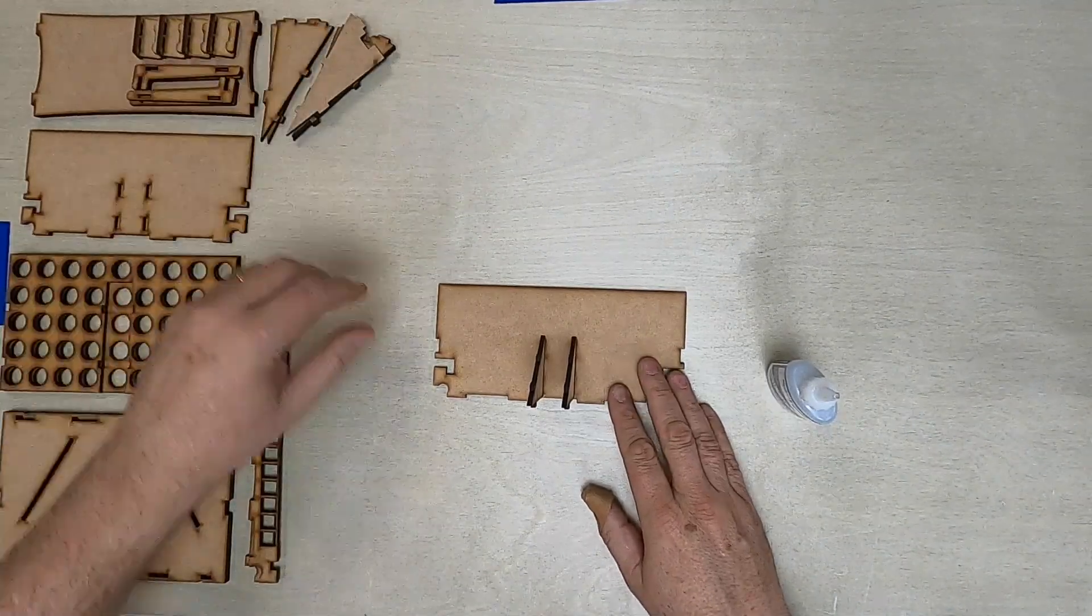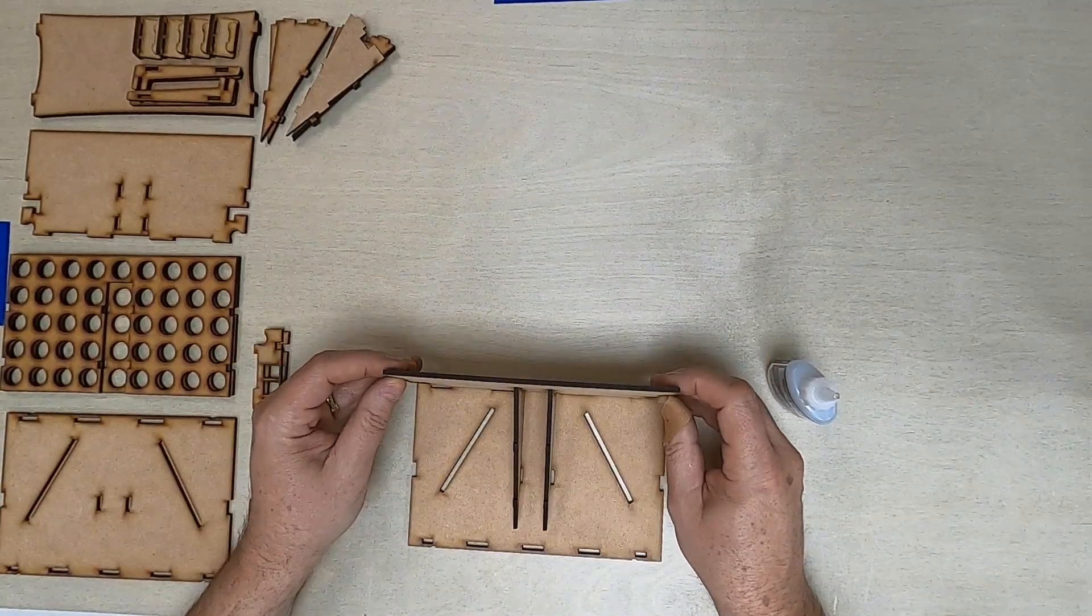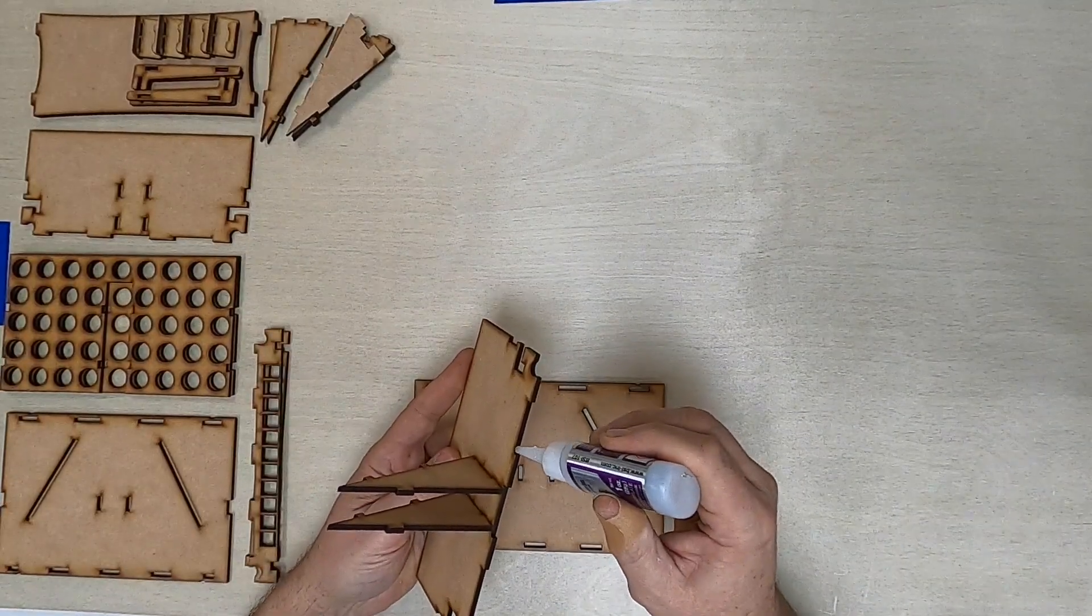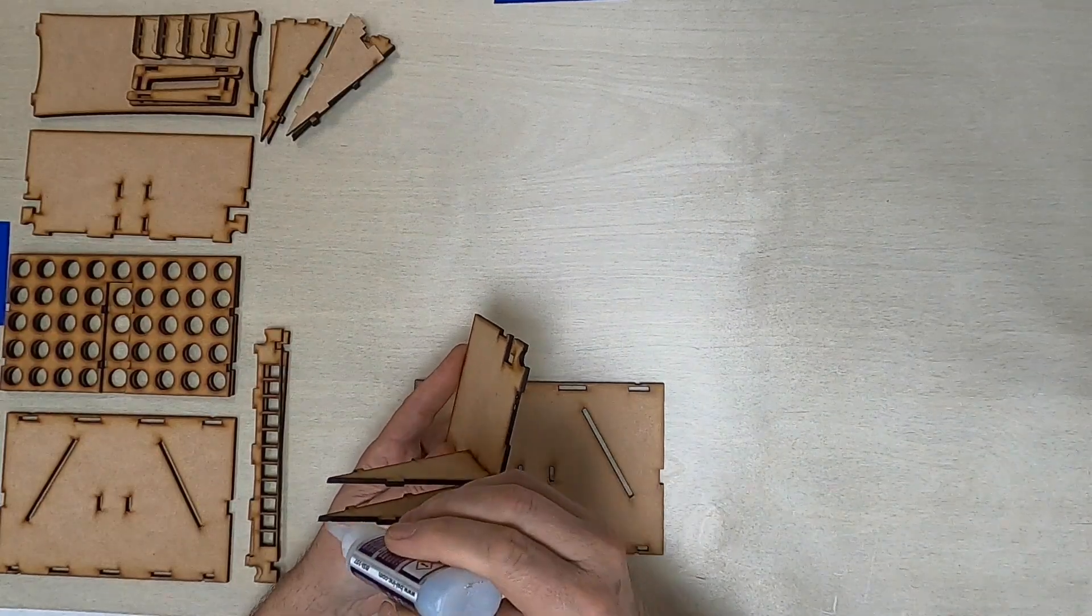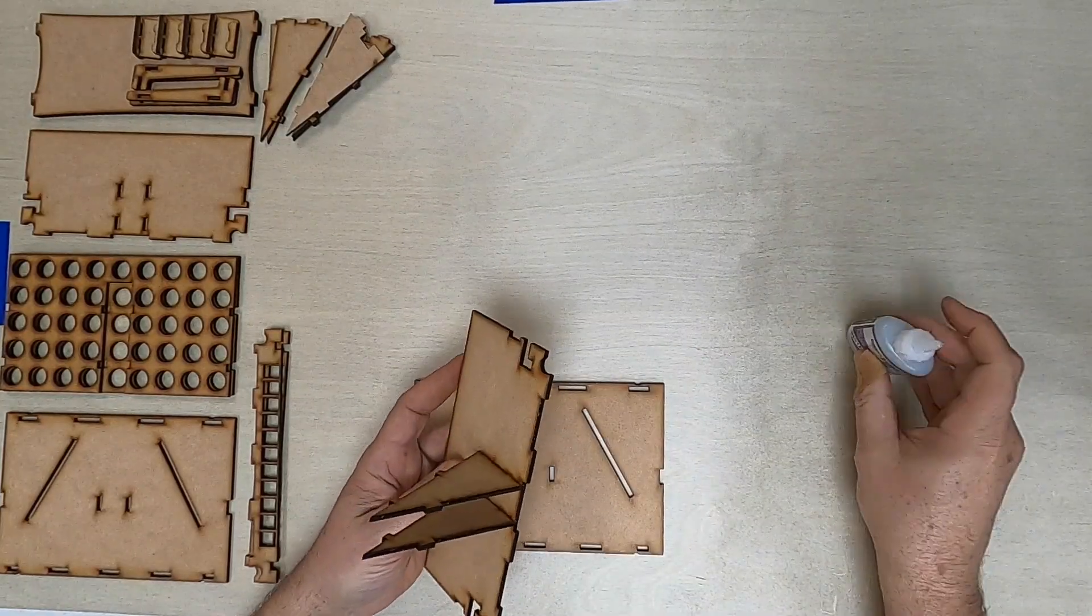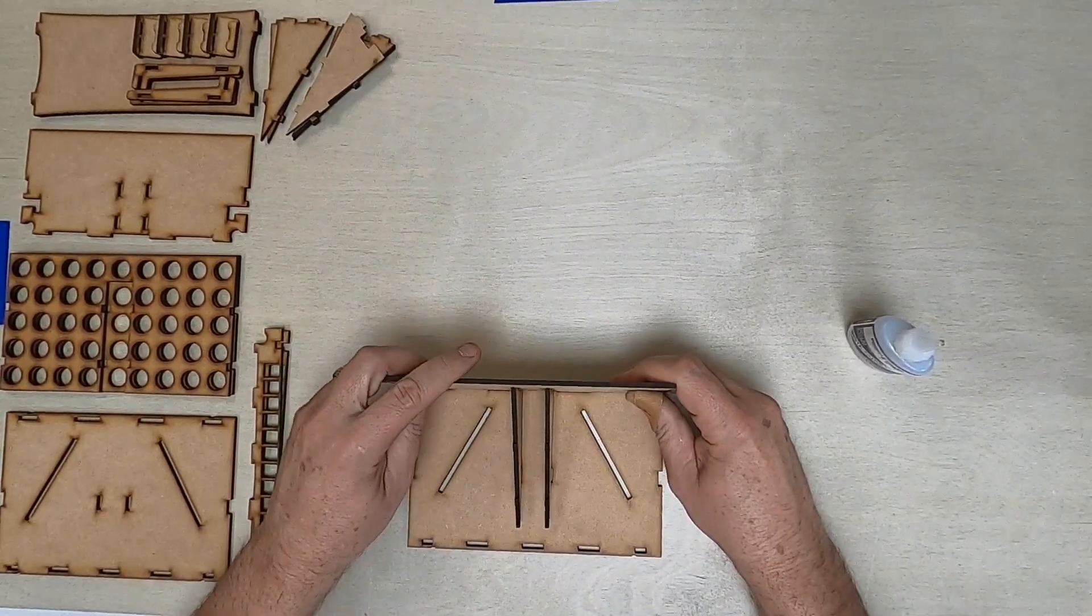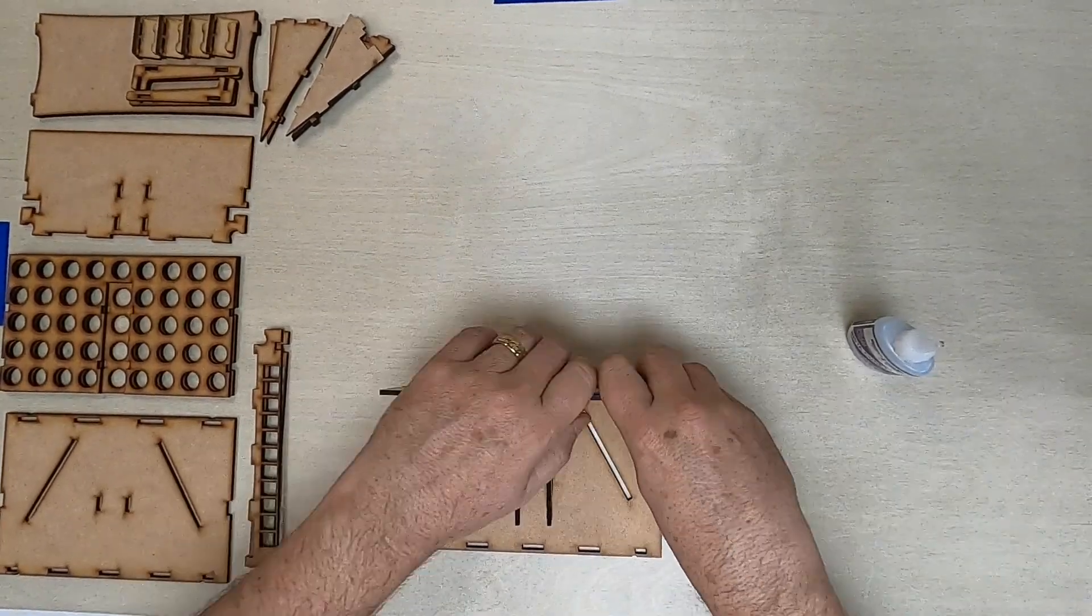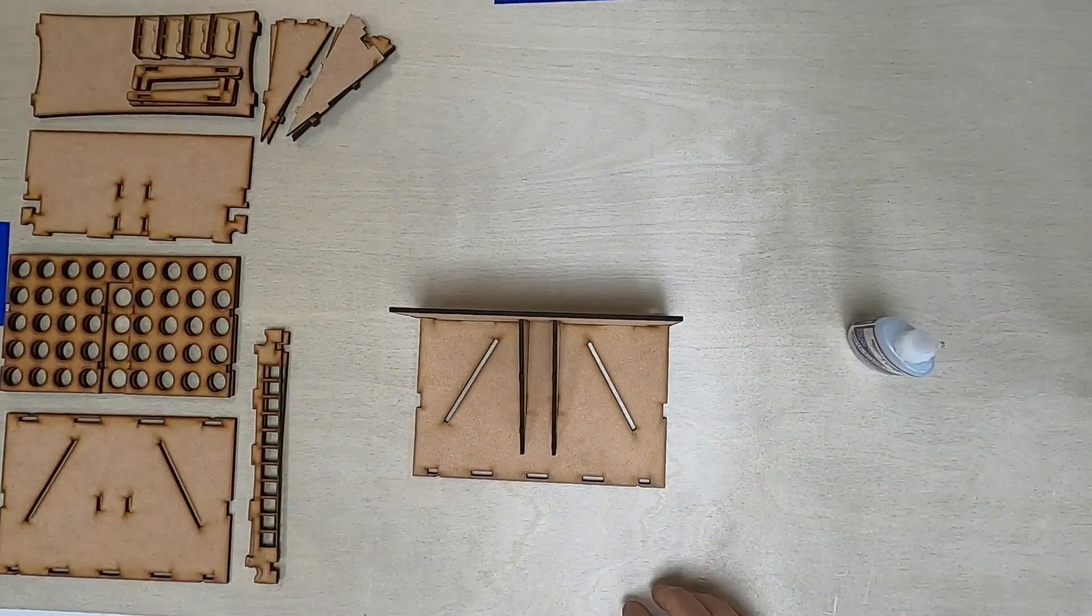So what we're doing right now is we'll add the base, and we're just going to apply it like that. Put some glue on it. Like that. Press it down. And that should be a good start.